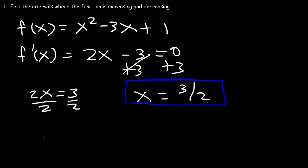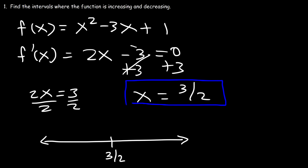Now let's make a sign chart and put 3 over 2 in it. Let's pick a number greater than 3 over 2 — let's say 4. If we plug 4 into the first derivative: 2 times 4 is 8 minus 3, that's 5, so that's positive. The first derivative is positive when x is greater than 3 over 2. When x is less than 3 over 2, let's try 0: 2 times 0 minus 3 is negative 3, so the first derivative is negative.